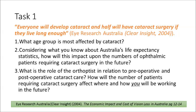The questions are: one, what age group is most affected by cataract? Two, considering what you know about Australia's life expectancy statistics, how will this impact upon the numbers of ophthalmic patients requiring cataract surgery in the future? And three, what is the role of the orthoptist in relation to pre-operative and post-operative care, and how will the number of patients affect where and how you will be working?